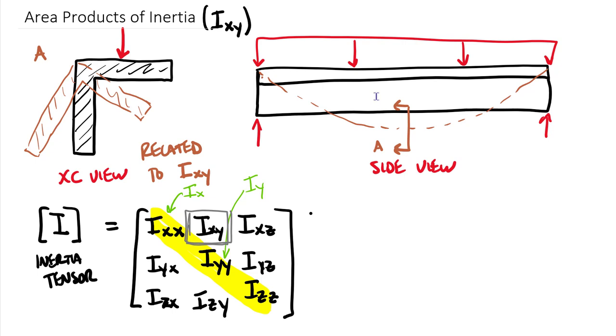In integral form, it turns out that Ixy is equal to the single integral of x times y dA. Instead of x squared or y squared, we now have just the distance x and y dA.